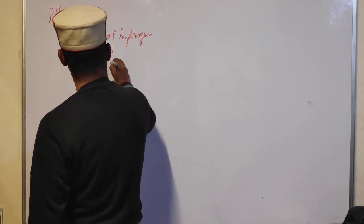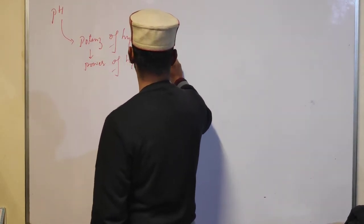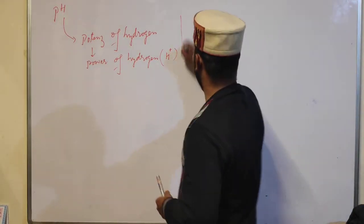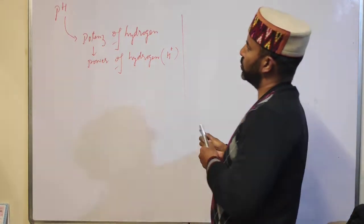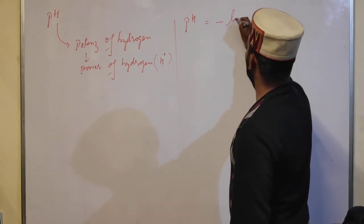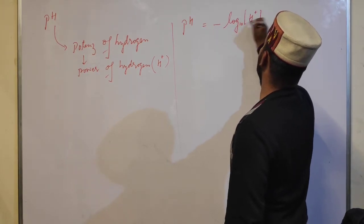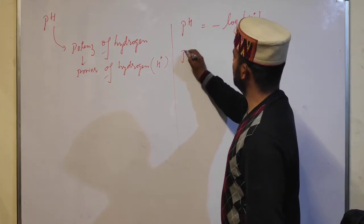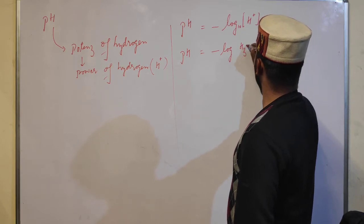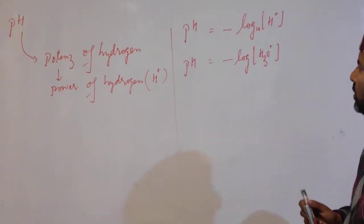So pH is the power of hydrogen — that is, the power of hydrogen present in the solution as H⁺ ions. Mathematically, pH is defined as the negative logarithm to the base 10 of the hydronium ion concentration: pH = -log[H₃O⁺]. We use hydronium ion concentration because in aqueous solution, H⁺ ions exist as hydronium ions.